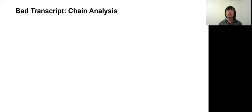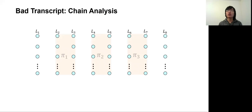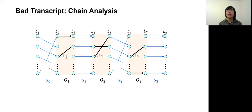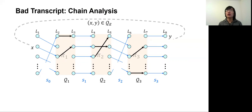We use the bad transcript definition from previous works. For any transcript tau, we represent it as a layered graph resembling the KAC construction. For neighboring layers inside the public permutations, vertices are connected by edges determined by the query record sets, and the edges between permutations represent the generated subkeys. We then identify the set of transcripts that are easy to distinguish between the real and ideal world by examining pairs of vertices (x, y) in Q_E, corresponding to a recorded cipher query.